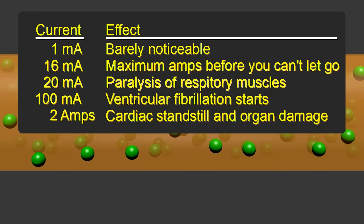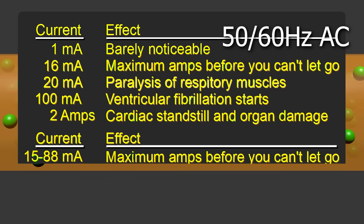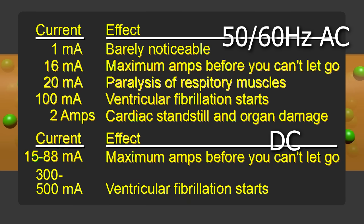Here's a table used in a few government's health and safety documents, telling you what happens to your body when different amounts of current flow through it. It's for both 50 and 60 Hz alternating current, or AC. For direct current, or DC, the current has to be higher, but the numbers are still in the milliamps.